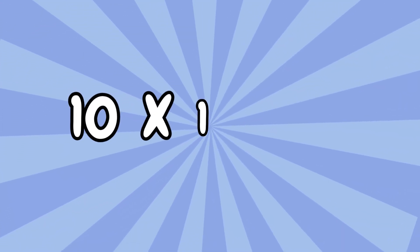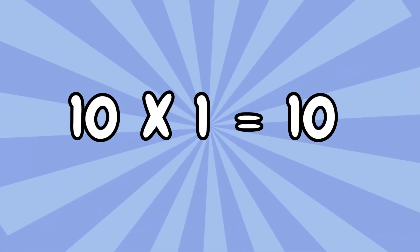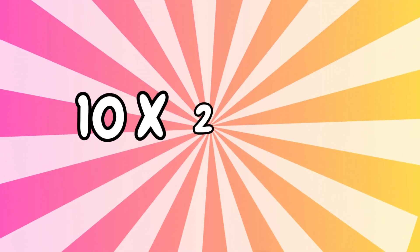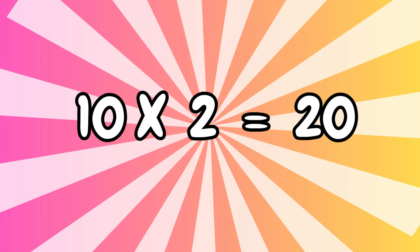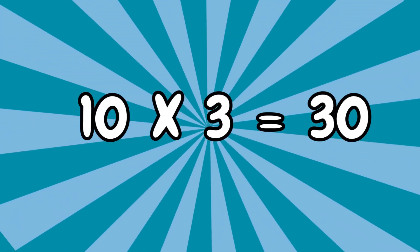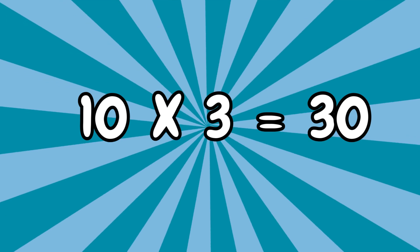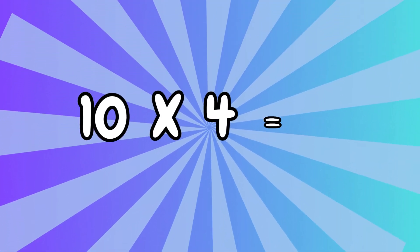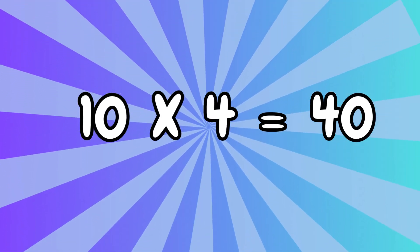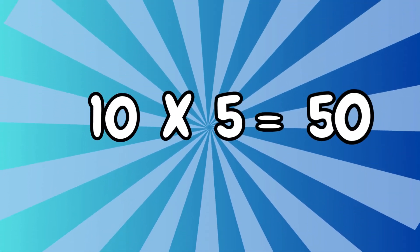Ten ones are ten. Ten twos are twenty. Ten threes are thirty. Ten fours are forty. Ten fives are fifty.